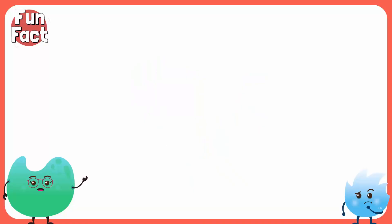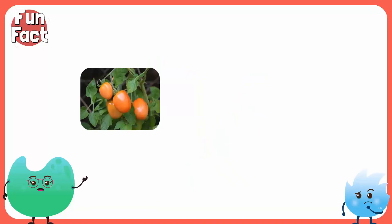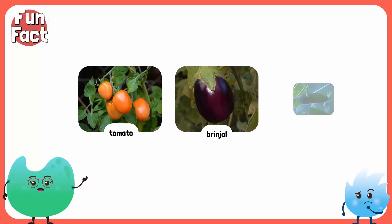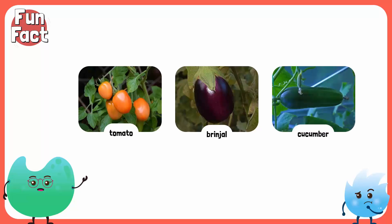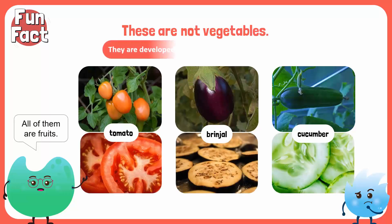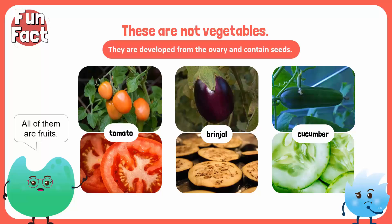Did you know many people think that tomatoes, brinjal, and cucumbers are vegetables? But they're actually fruits. Can you guess why? Because they develop from the ovary of a flower and contain seeds.